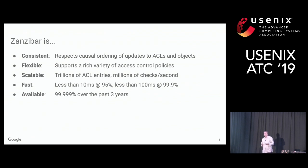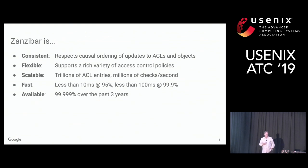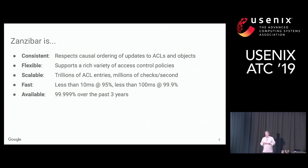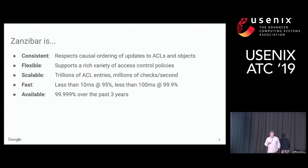Zanzibar needs to be flexible to support a very rich variety of access control policies, since hundreds of services are clients with very widely different access control patterns. It also needs to be scalable — many client services are themselves global, with over a billion users and billions of objects. Zanzibar has been shown to scale to trillions of access control entries and millions of authorization checks per second.